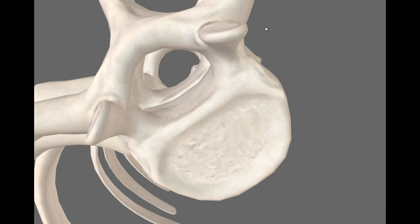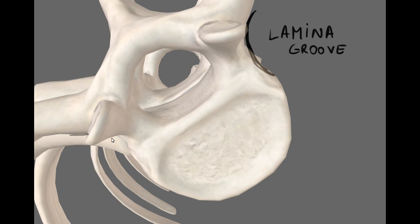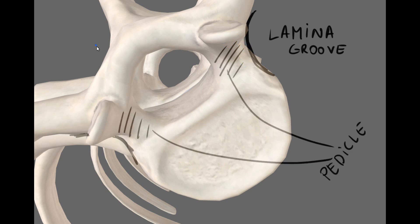To finish this up, a few more common features of typical thoracic vertebrae: we have the lamina groove on both sides of the vertebral column, left and right; we have the pedicle, again two of those; and we have the vertebral canal, which is where the spinal cord runs through. So there you have it — typical thoracic vertebrae.